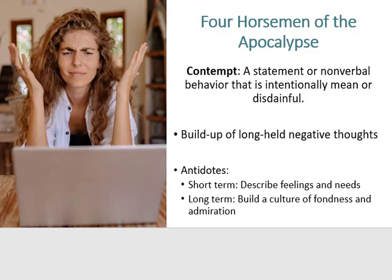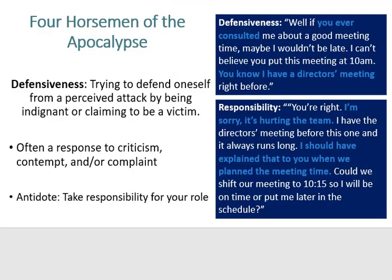The short-term antidote for contempt is to describe your feelings and needs — similar to the criticism antidote, focus on what you need and try to avoid blaming and attacking someone. A long-term antidote is to build a culture of fondness and admiration: try to focus on what this co-worker does well, and appreciate and express gratitude for positive qualities and actions. As a real-life example, contempt feedback would be 'Why do you suck at entering grades?' whereas positive feedback might be 'You do a great job entering the assessment data here — how can we apply that to this?' It moves the situation from breaking someone down to something that helps them improve and move forward.